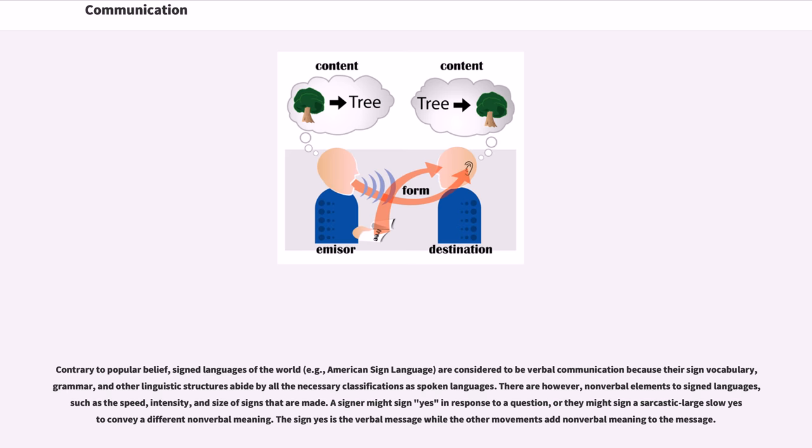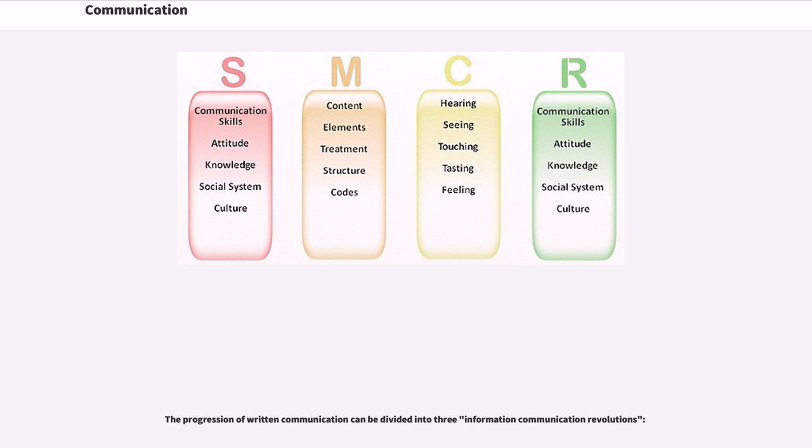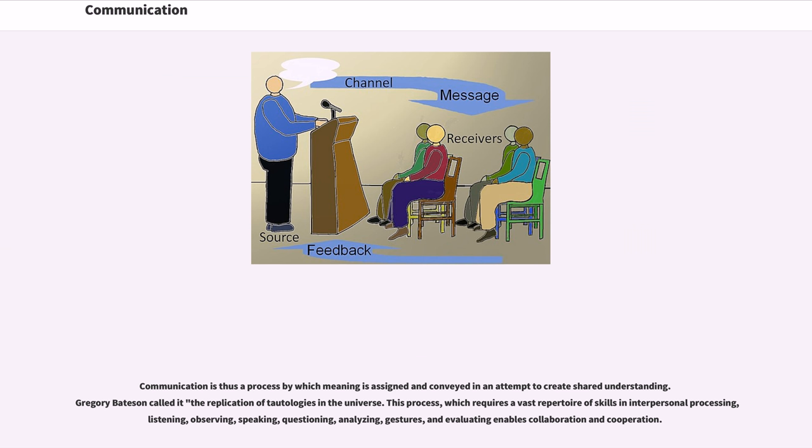Over time, the forms and ideas about communication have evolved through the continuing progression of technology. Advances include communications psychology and media psychology, an emerging field of study. The progression of written communication can be divided into three information communication revolutions. Communication is thus a process by which meaning is assigned and conveyed in an attempt to create shared understanding. Gregory Bateson called it the replication of tautologies in the universe. This process, which requires a vast repertoire of skills in interpersonal processing—listening, observing, speaking, questioning, analyzing gestures, and evaluating—enables collaboration and cooperation.